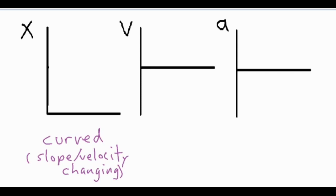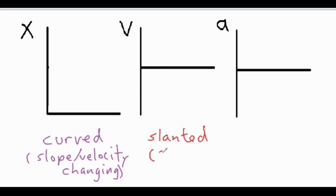For the velocity versus time graph, because it's accelerated motion, the velocity is always changing, so we are always going to have a slanted but straight line.